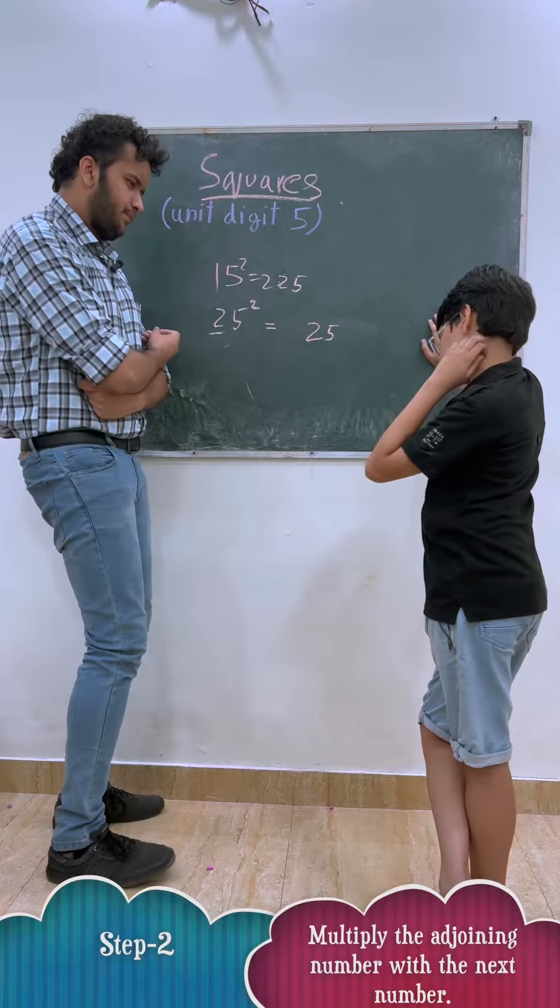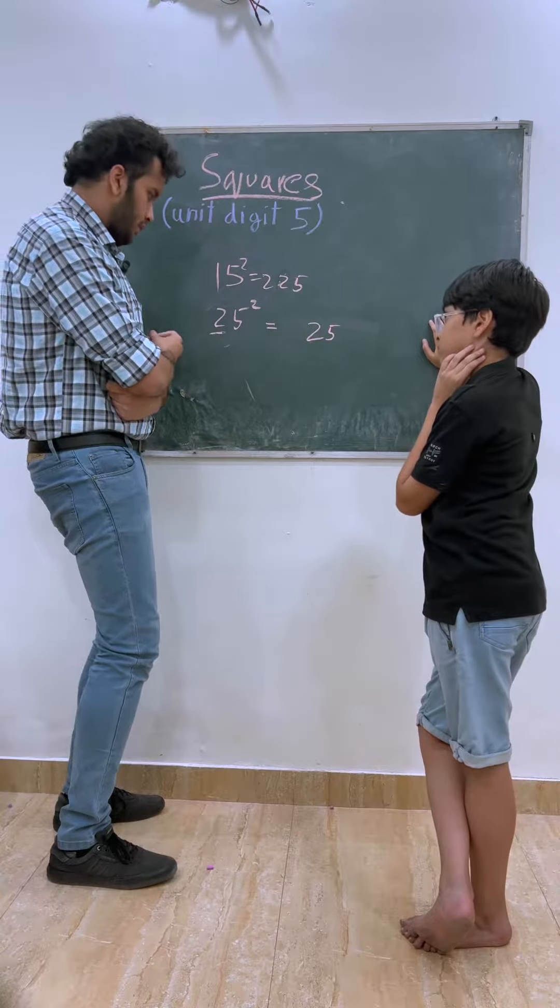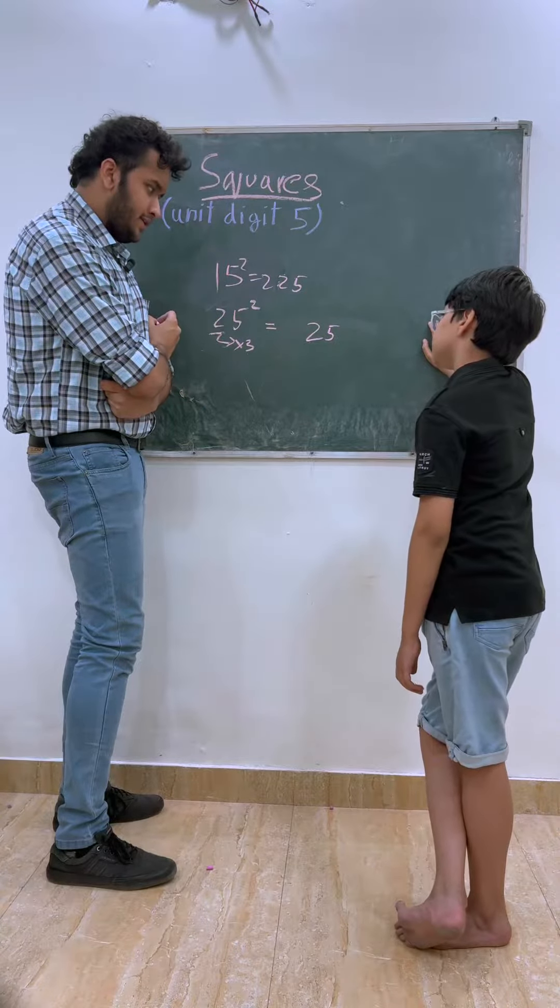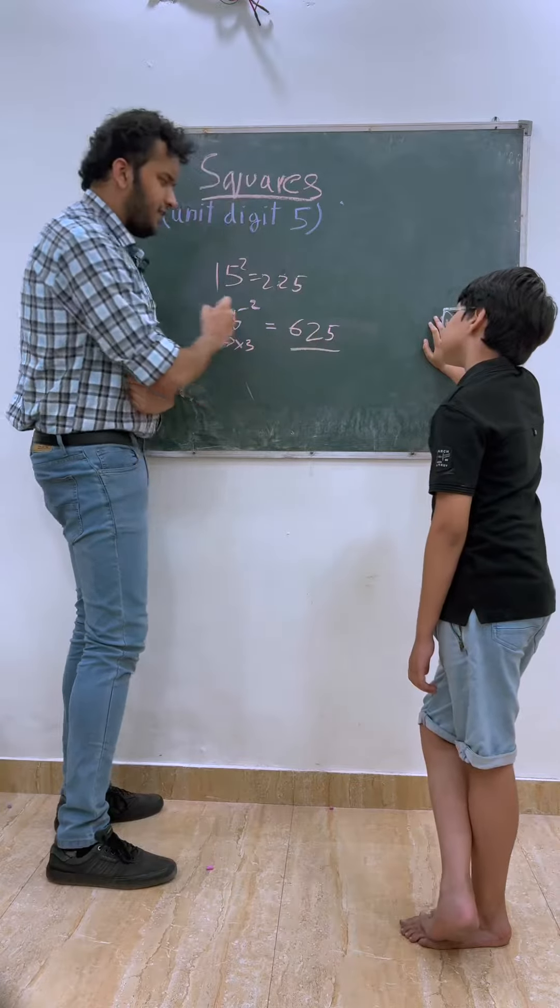What is your next number? Your next number is 3. If we multiply it by 3, how much will it go? 6. Very good. What is your answer? 625.